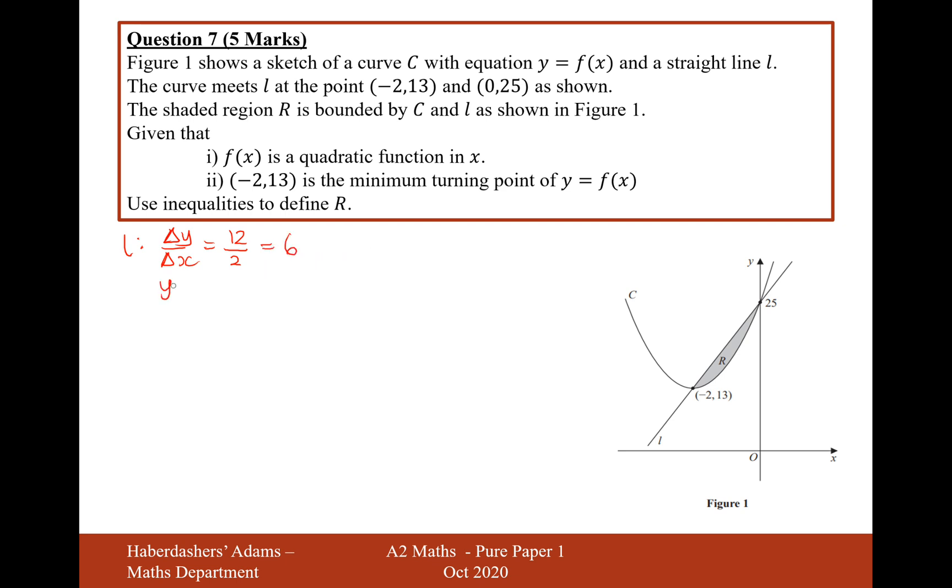So therefore, y equals mx plus c is the equation of any straight line. We know specifically for this straight line that the gradient will be 6, and that it will go through the coordinates 0, 25, so therefore it has to have a y-intercept of 25. So the graph here, the line, is 6x plus 25.